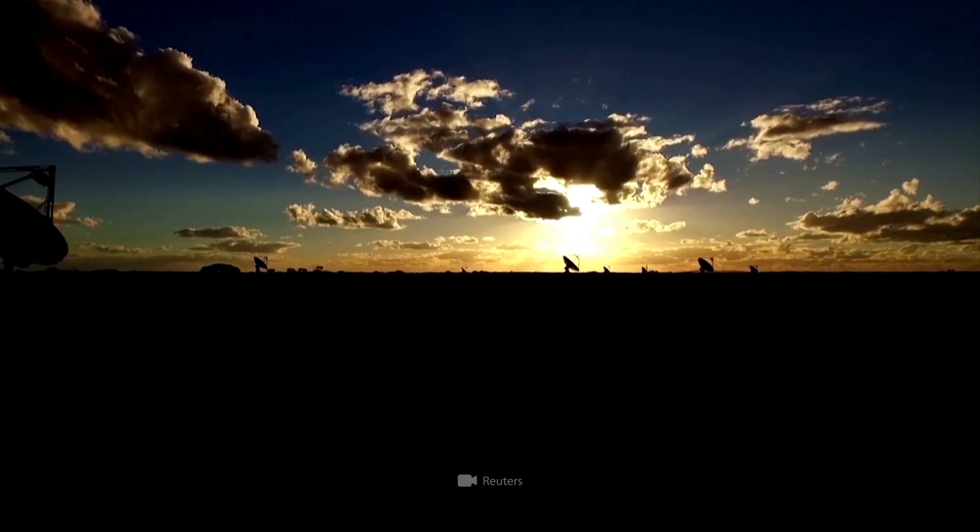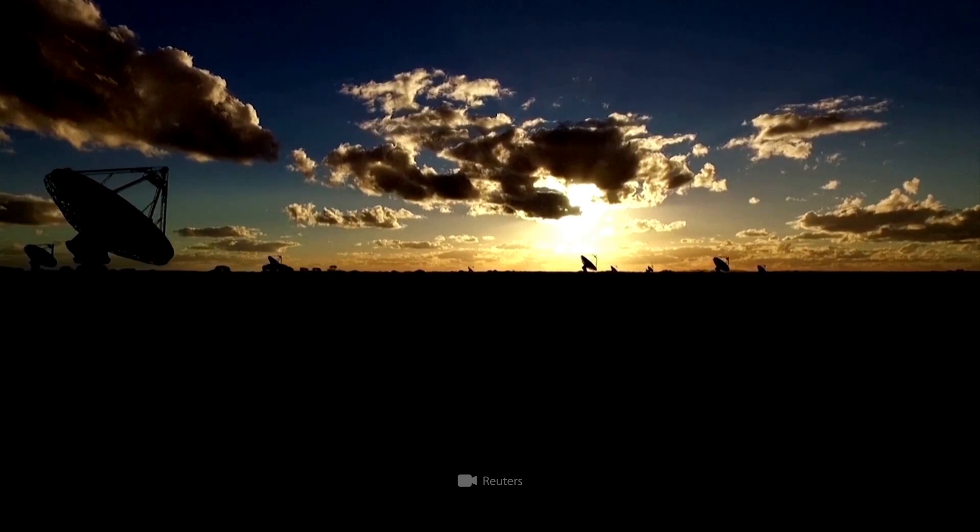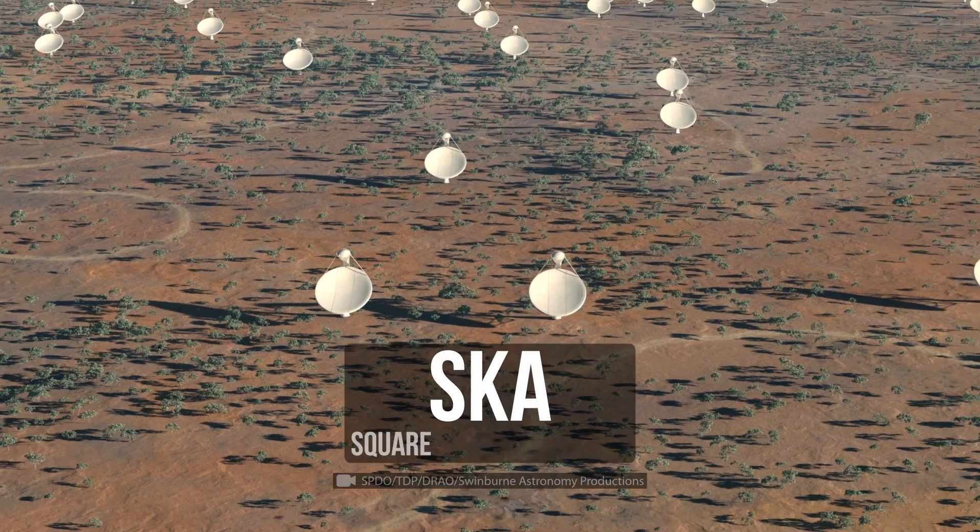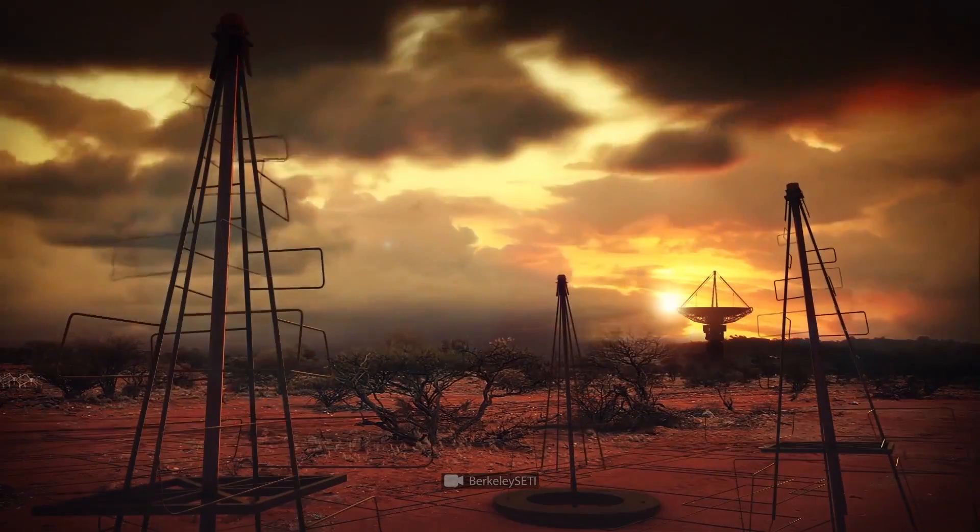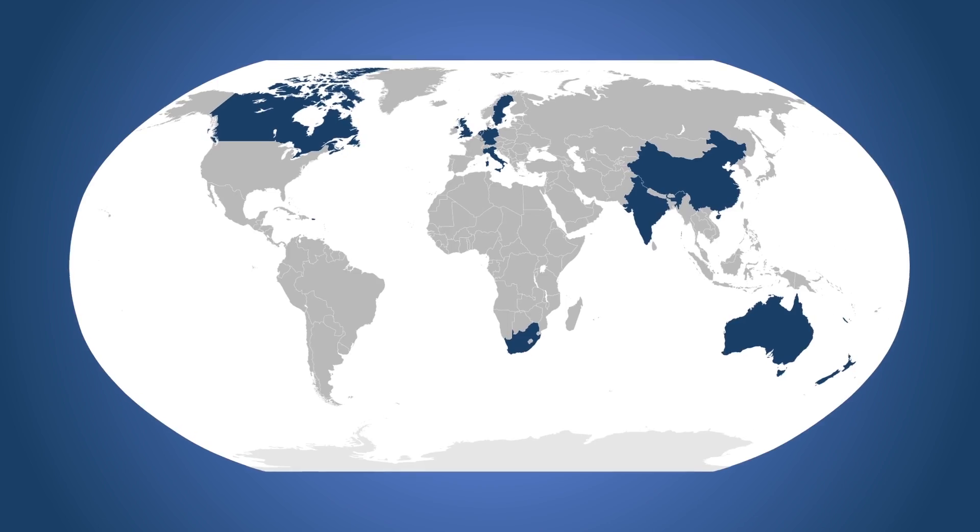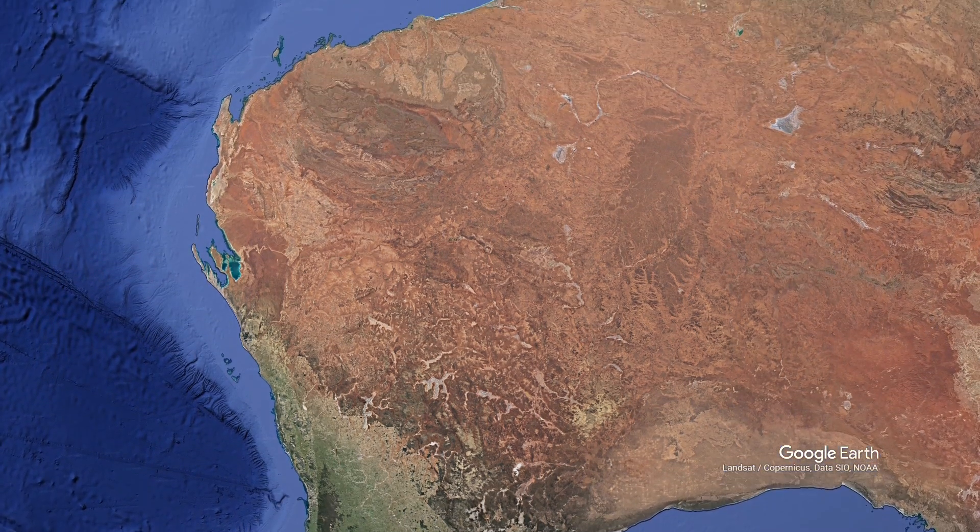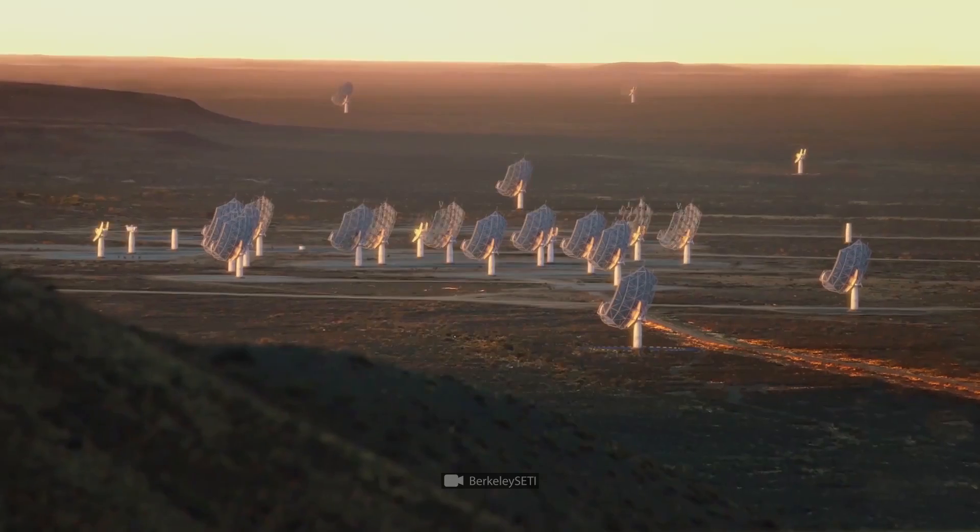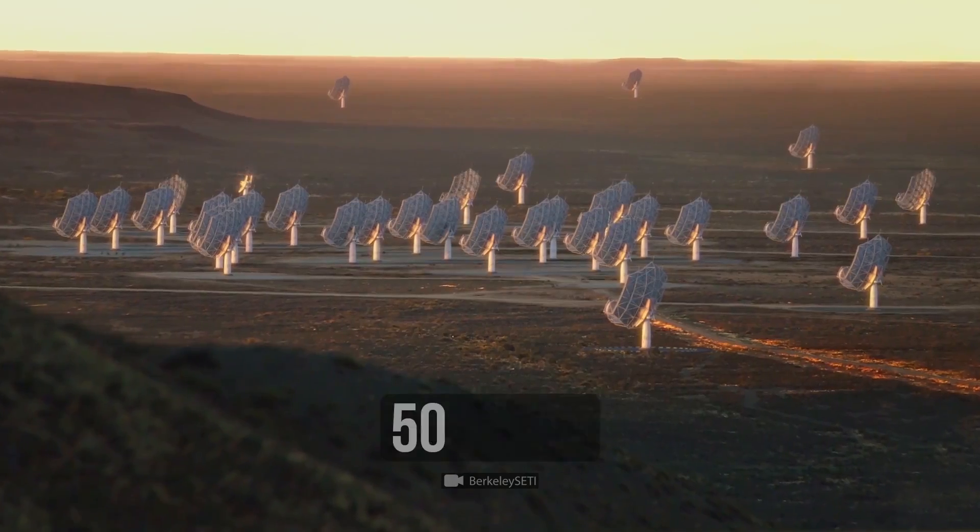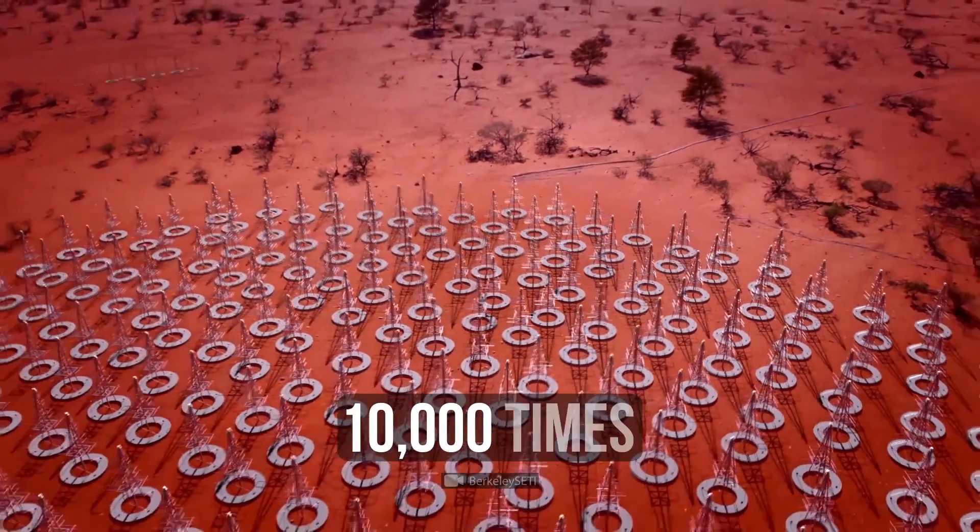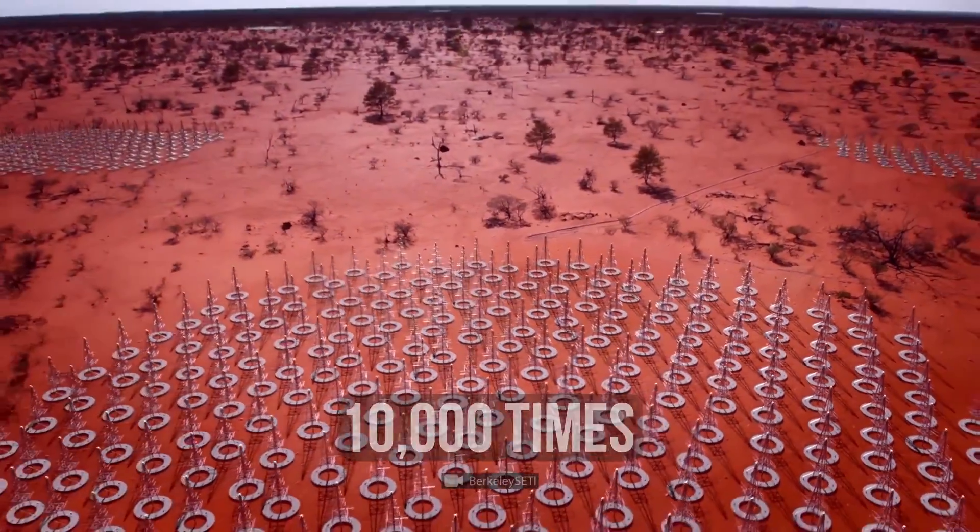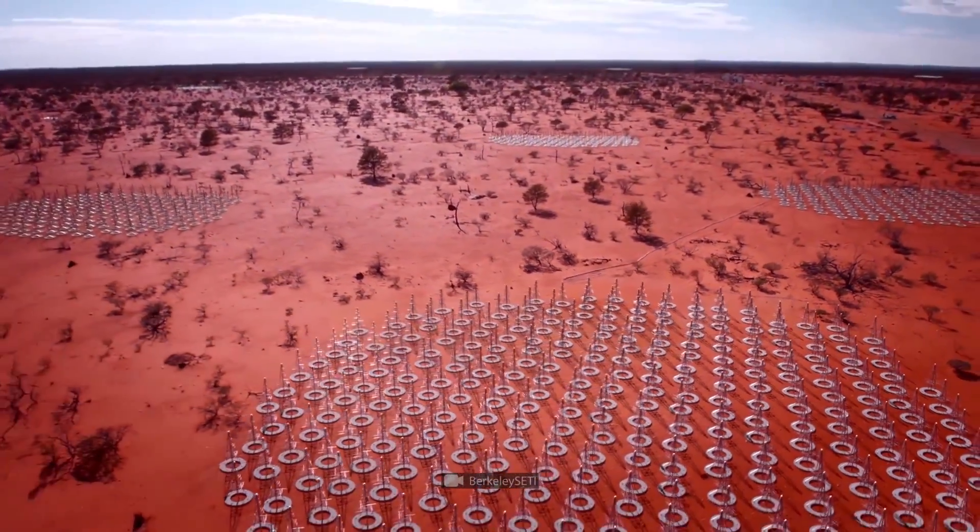In addition to the ASCAP telescope, the EMU project is planning to use the SKA Antenna Array. It's being collectively built by 20 countries on the territory of Australia and South Africa. This radio telescope will be 50 times more sensitive and will be able to work 10,000 times faster than any other currently existing telescope.